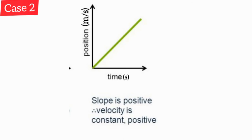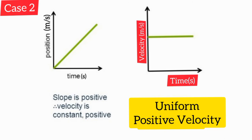Now let's move on to case number two. Here the s-t graph is a straight line. For all straight line graphs, the gradient is constant. Therefore, the graph shows motion of constant or uniform velocity. The gradient is also positive, which means the velocity is positive and the object is moving in the positive direction. So the v-t graph should show a uniform positive velocity — a horizontal line at a constant positive value.